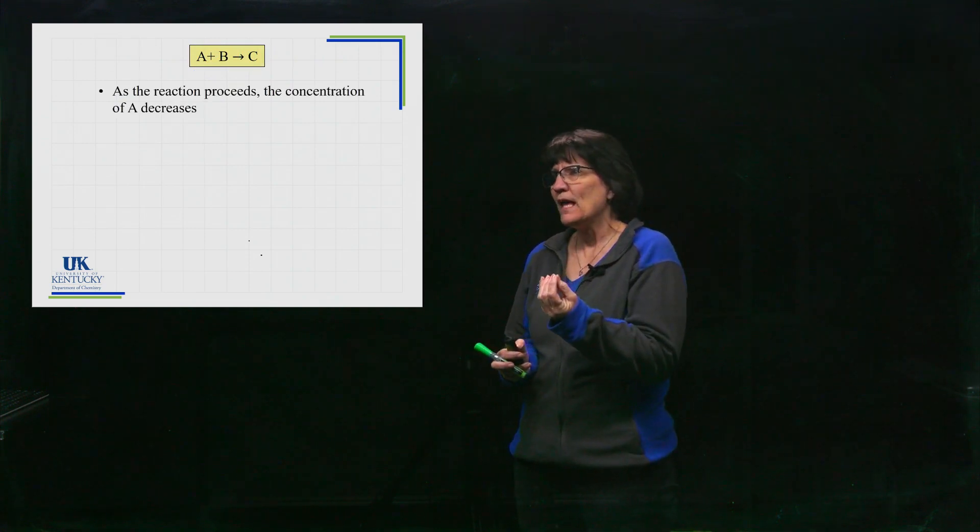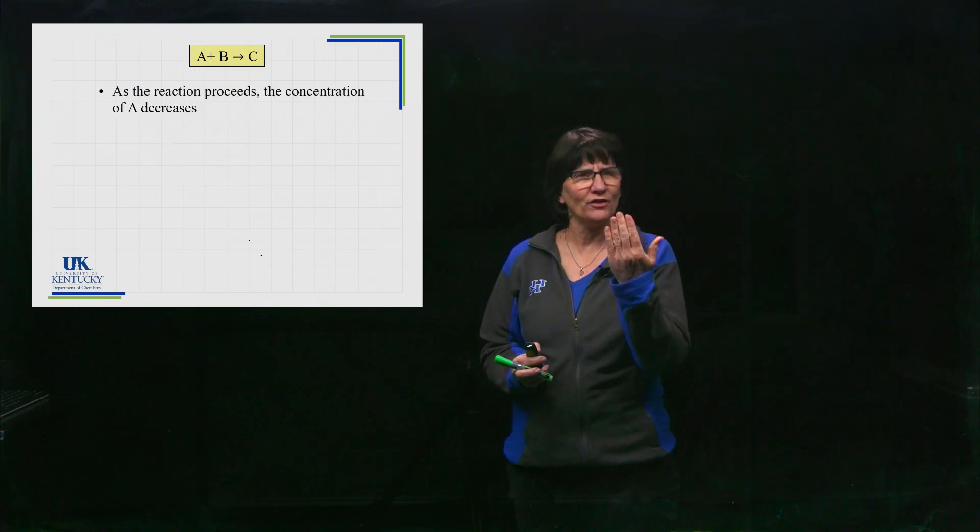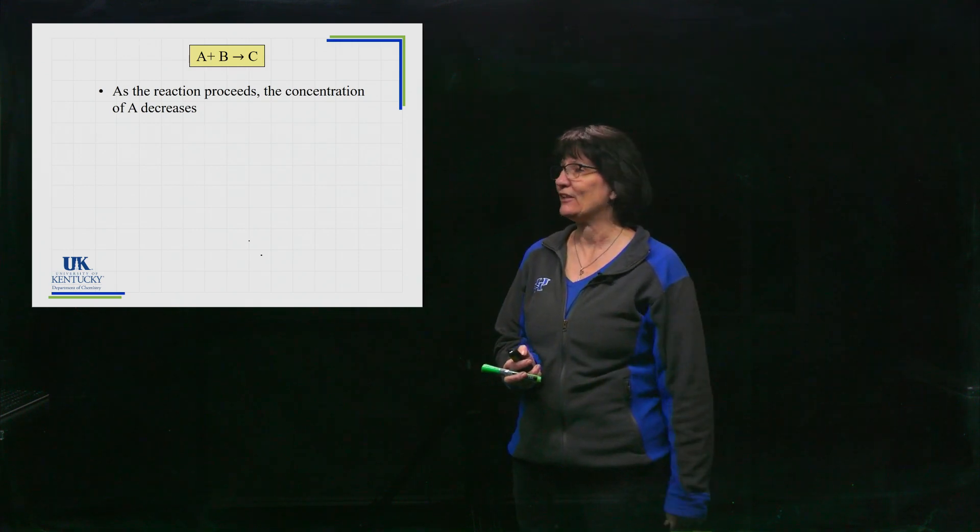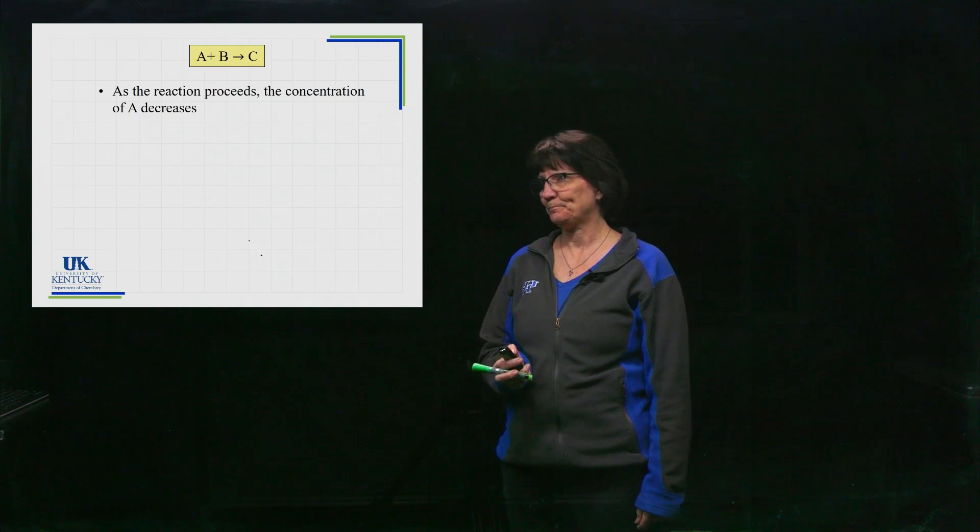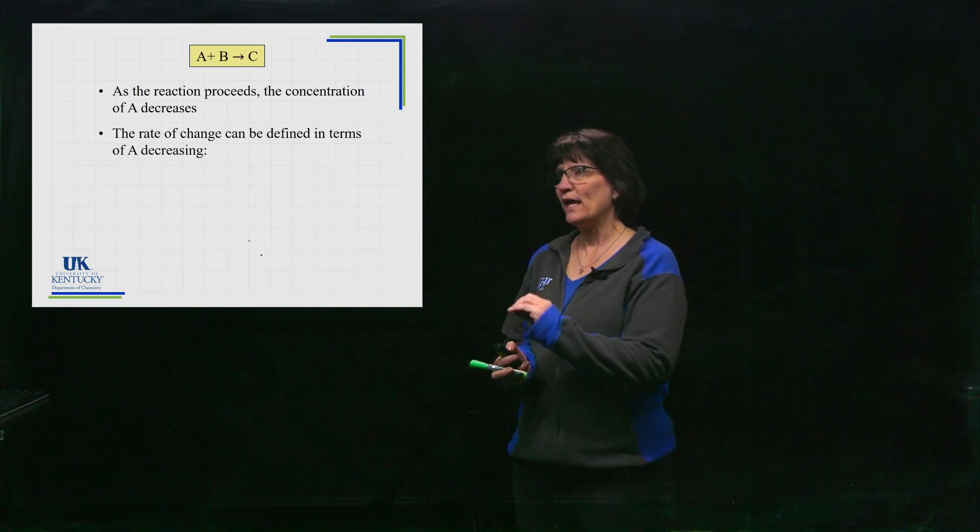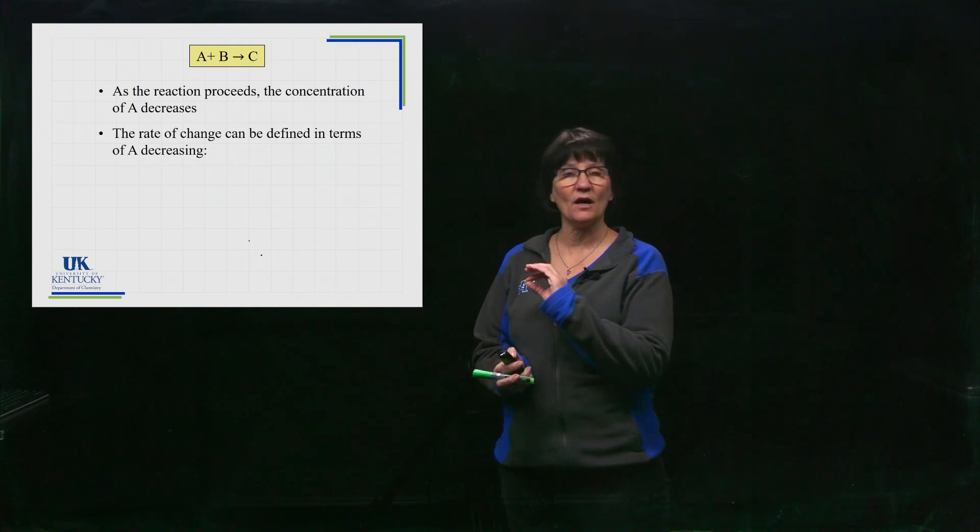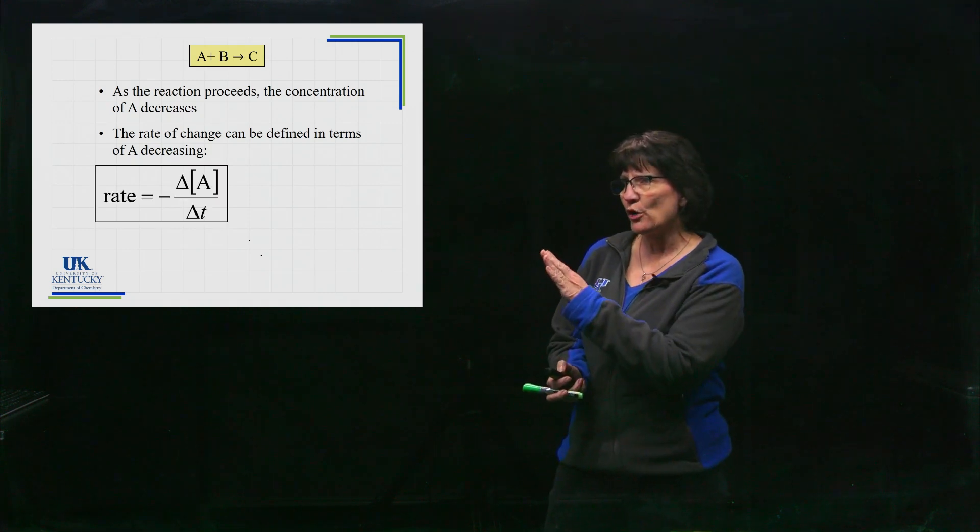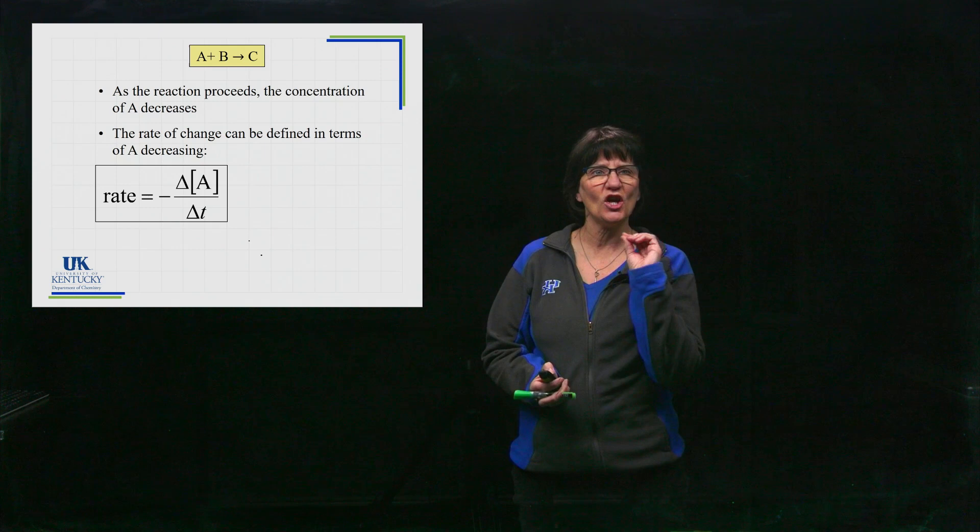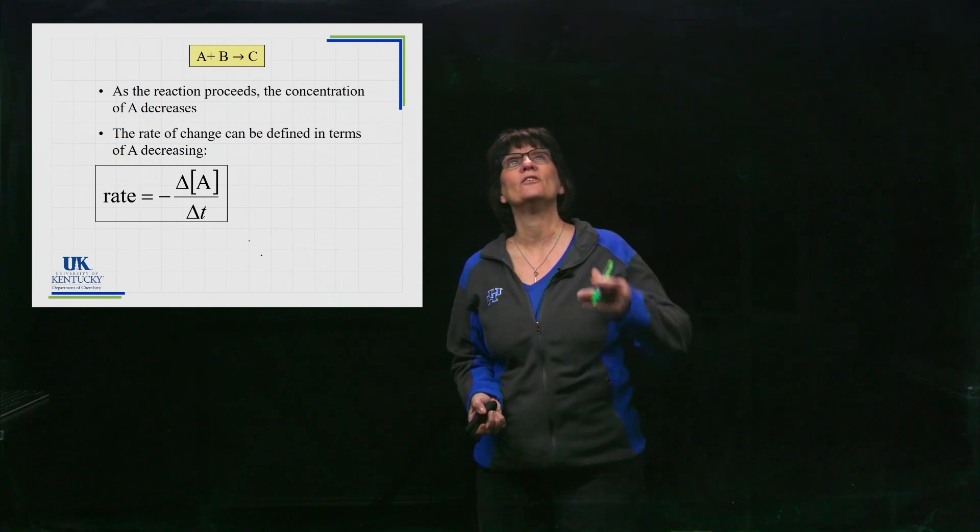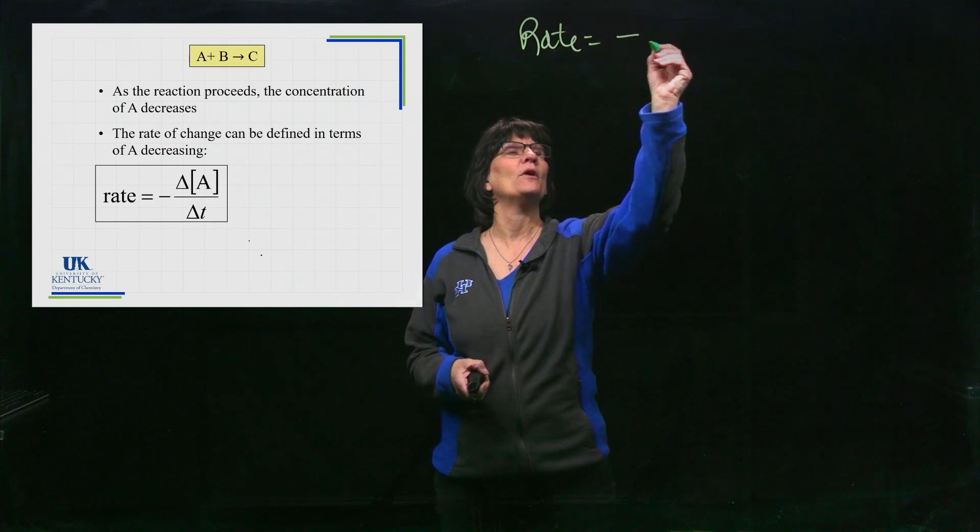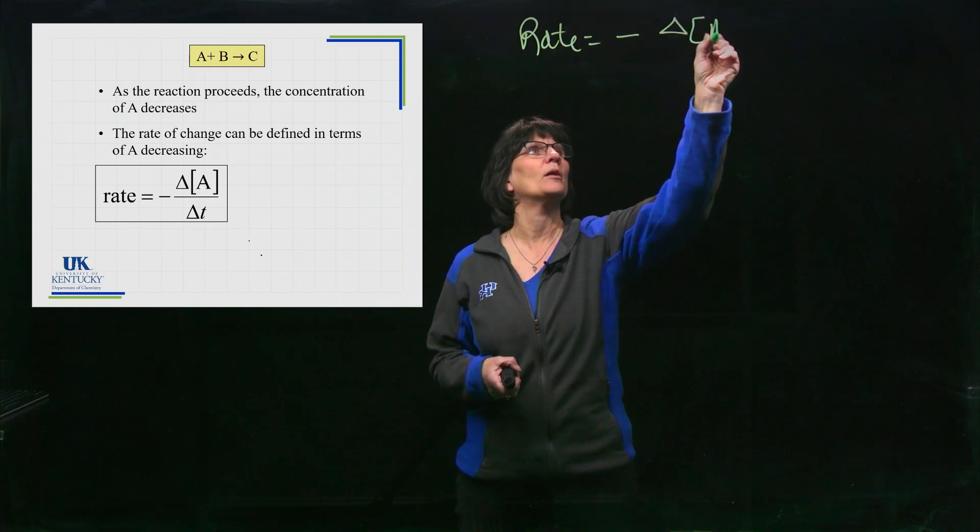We can't go a negative speed, you can't go a negative rate. So what we do for a reaction in order to define the rate is we are going to have to take into account that the change in concentration is negative but the rate of the reaction is not. All right, so the rate of change can be defined in terms of that A decreasing by this manner. Notice the Delta A, just that portion, and I'm going to write that up here. Okay, so I can kind of point at it. Rate of the reaction, we put a negative sign in there which we're going to talk about.